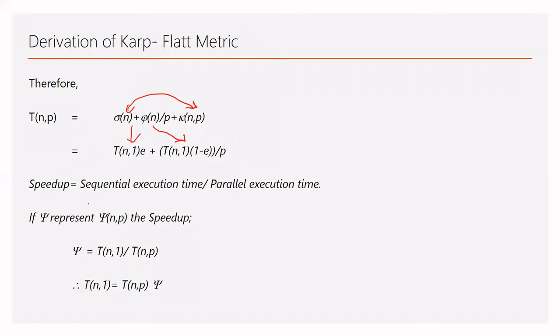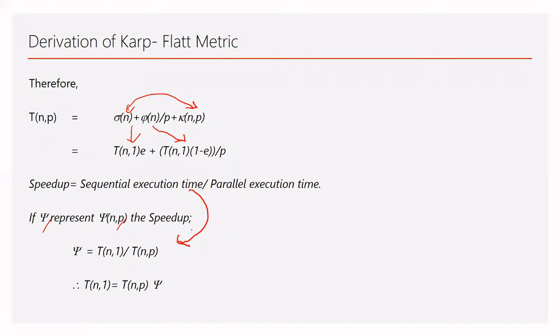Now for speedup — speedup is given as sequential execution time divided by parallel execution time. We use the symbol Psi to represent Psi(N,P). Sequential execution time is the time required for the complete program to execute using only one processor, that is T(N,1), and parallel execution time is the time required for the whole program to run on P processors.